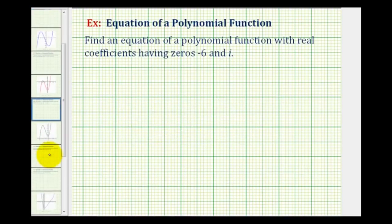So for our example, notice how one of the zeros is positive i, which we can write as zero plus i, which means the conjugate of this would be zero minus i or just negative i. So the zeros of our function are negative six, positive i, and negative i.